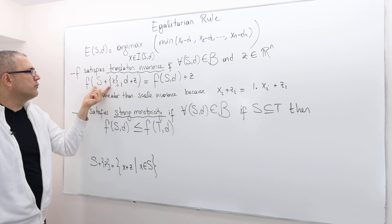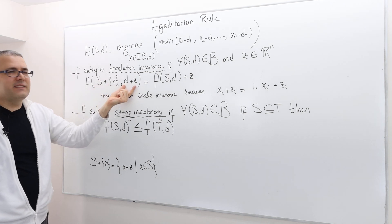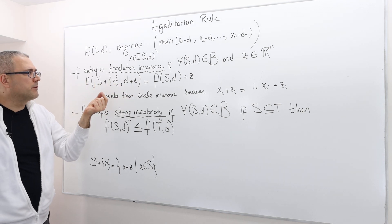I add this vector Z to my bargaining set S, and then I also add this Z to my disagreement point.